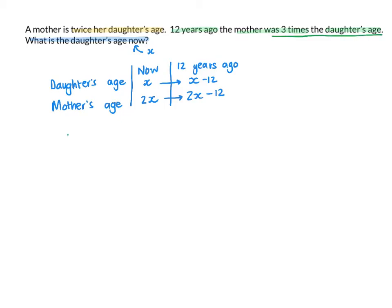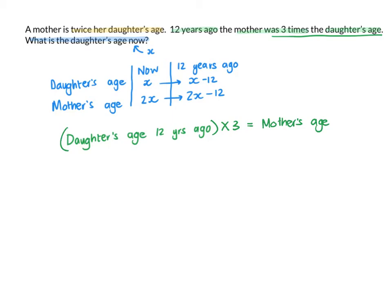So if I take the daughter's age twelve years ago and multiply that by three, I'm going to get the mother's age. For when? For twelve years ago. And in that way, I can set up an equation.